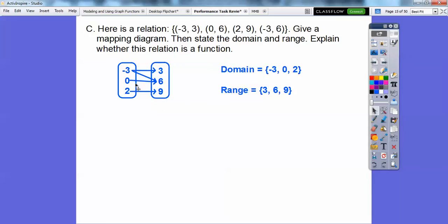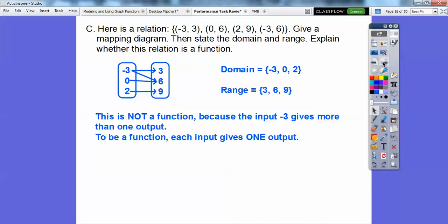Negative 3 also goes to 6 again, so it's going to go to that right there. Okay, so there it is. There's our mapping diagram. The domain is all the input values, these x values right here. It's all the first coordinates, and the range is all the y values right here. And this relation is not a function because the input negative 3 goes to two different outputs. To be a function, it can only go to one output right there.